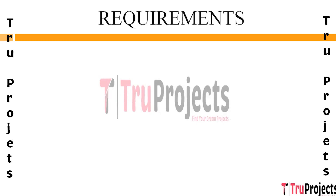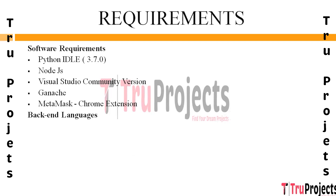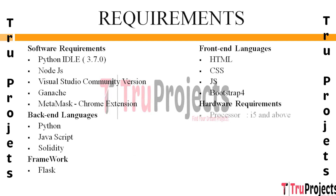Requirements needed to execute this project: software requirements include Python IDLE version 3.7.0, Node.js, Visual Studio Community, Ganache, and MetaMask Chrome extension. Backend languages used are Python and JavaScript; the framework used is Flask. Frontend languages required are HTML, CSS, JS, and Bootstrap. Hardware requirements are a processor of i5 and above, RAM of 8GB and above, and storage of 25GB and above.